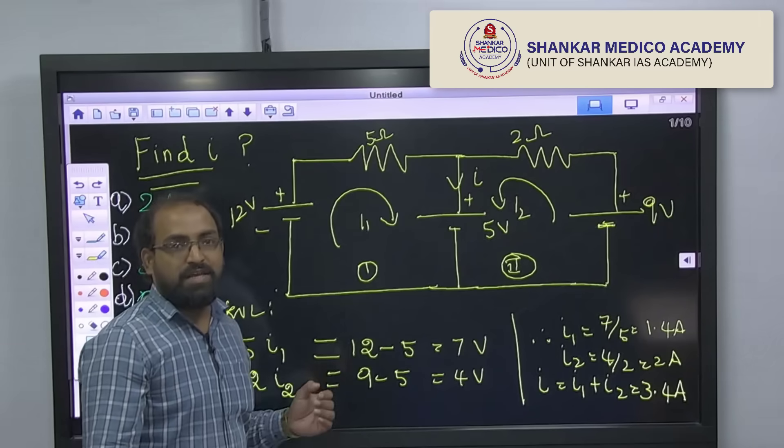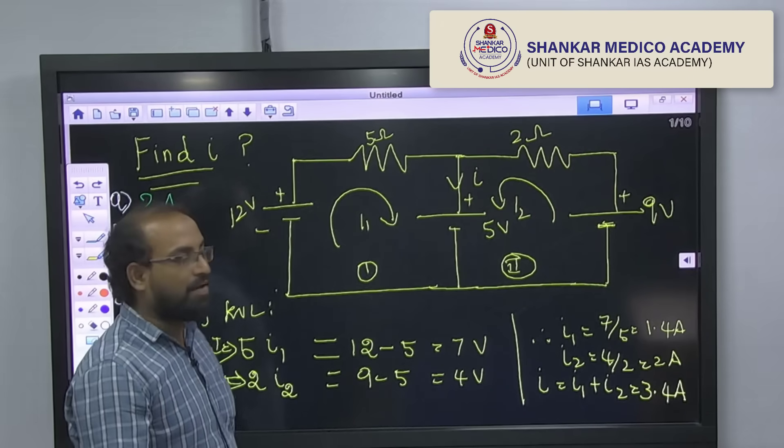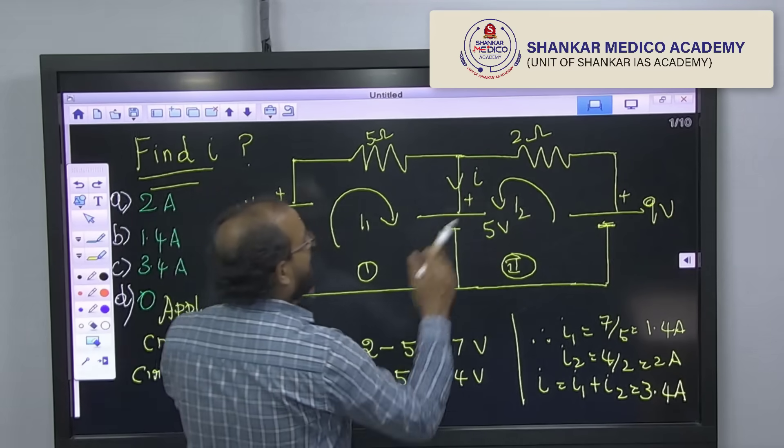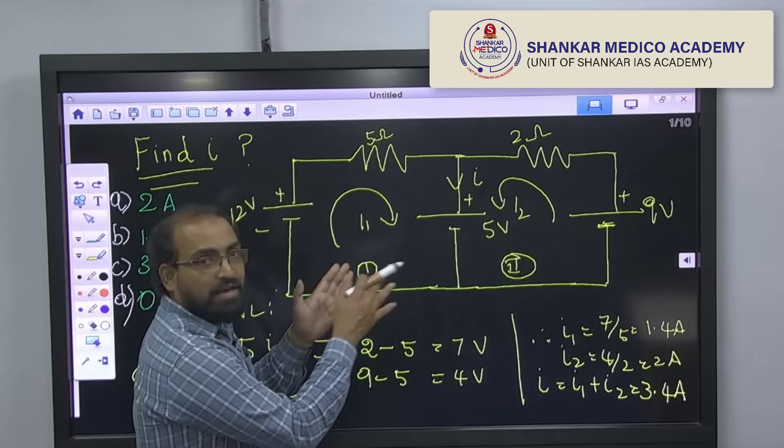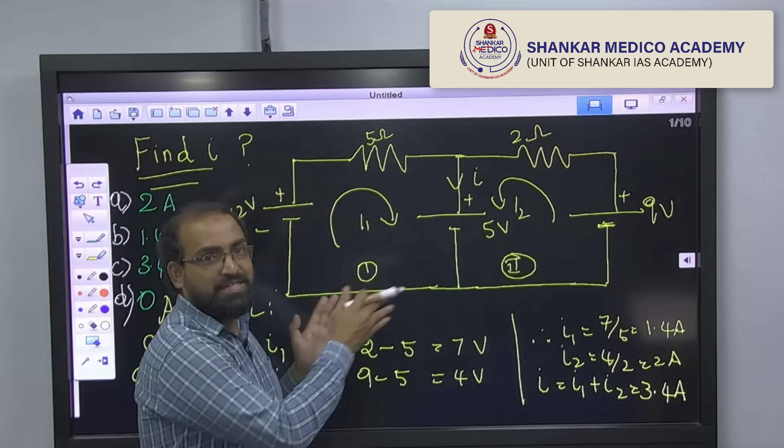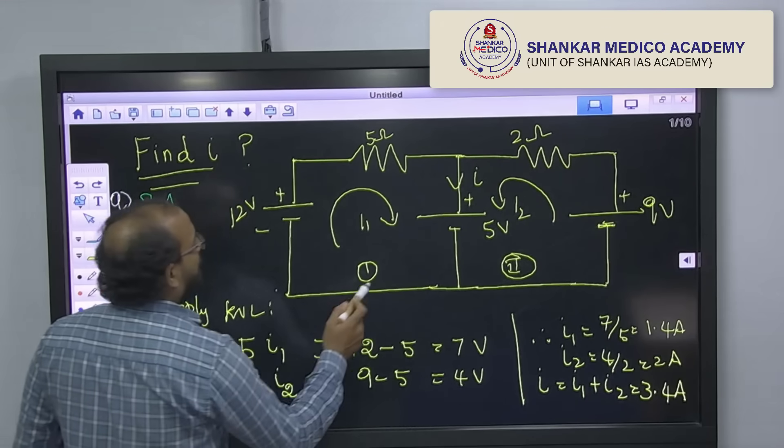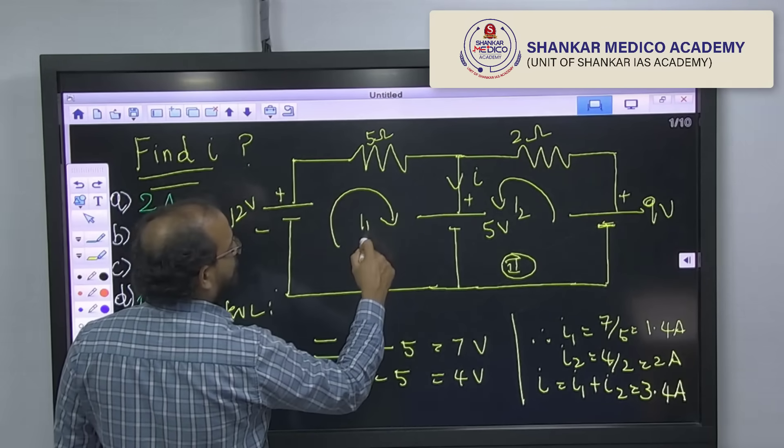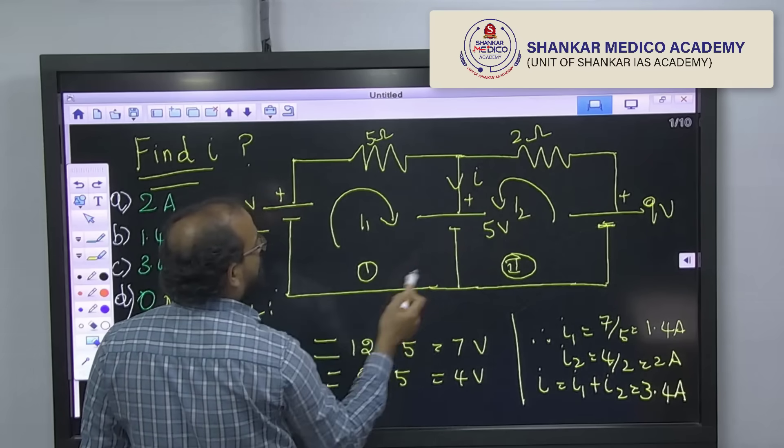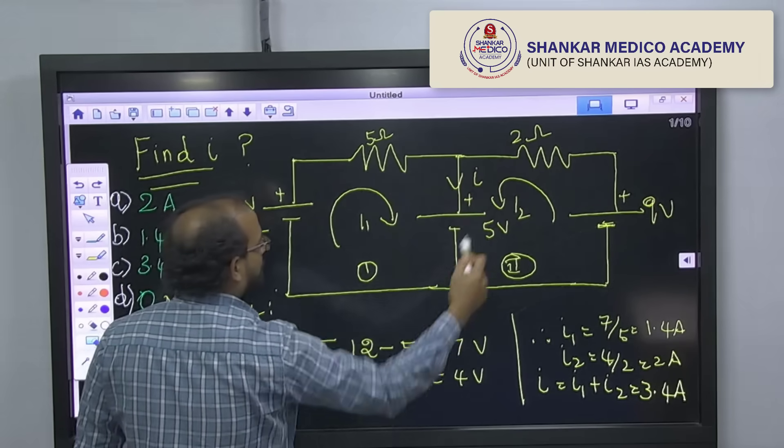Now let us see how conventionally we will solve. Normally, if the circuit is given like this, we will go for Kirchhoff voltage law. That means mesh analysis or loop analysis. By that we are considering two loops, circuit 1 and circuit 2. There is a closed path is called loop.